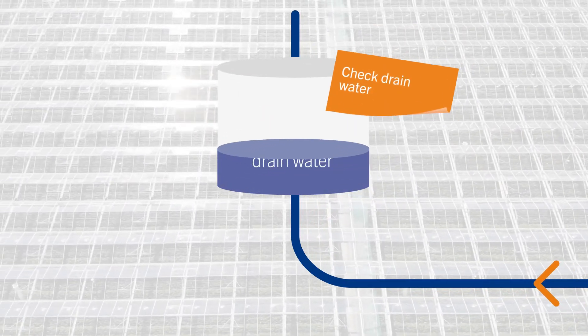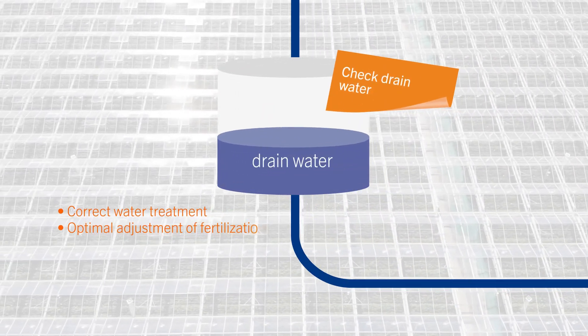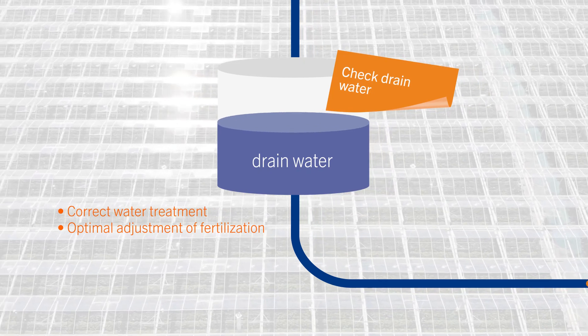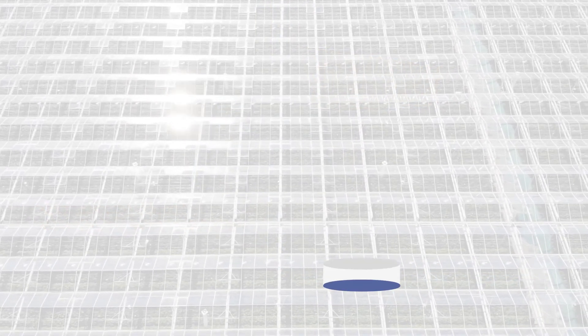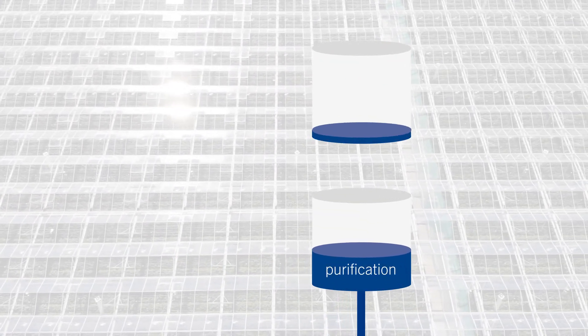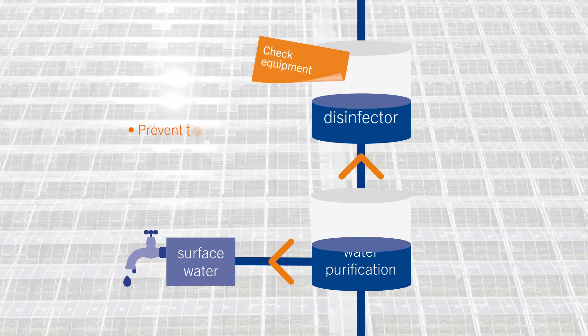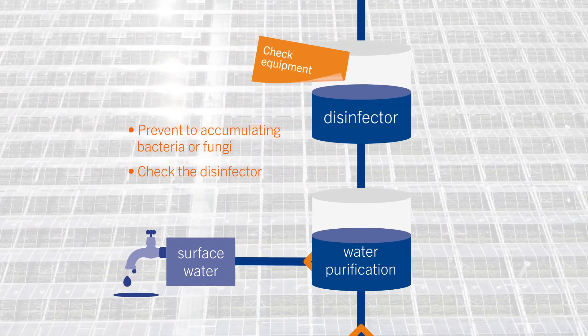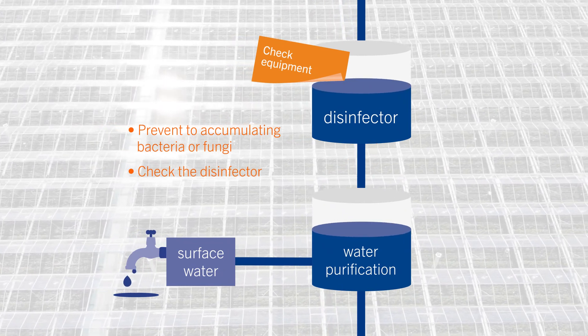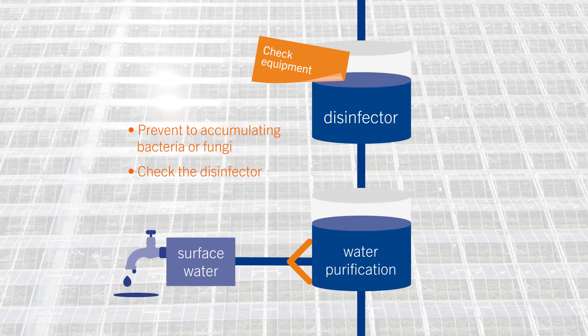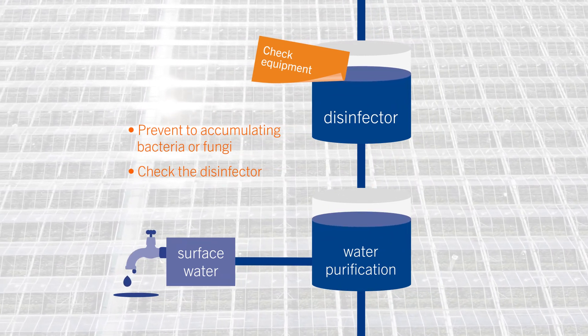Checking the drain makes it possible to take adequate measures to ensure correct water treatment. Purification and disinfection of the water is indispensable to prevent bacteria or fungi accumulating in the system. But even more important is checking the disinfector.